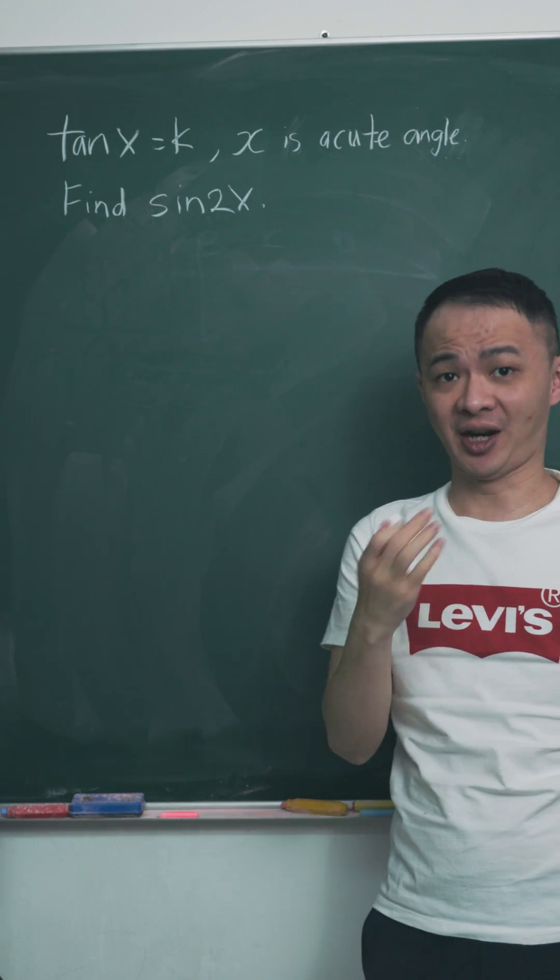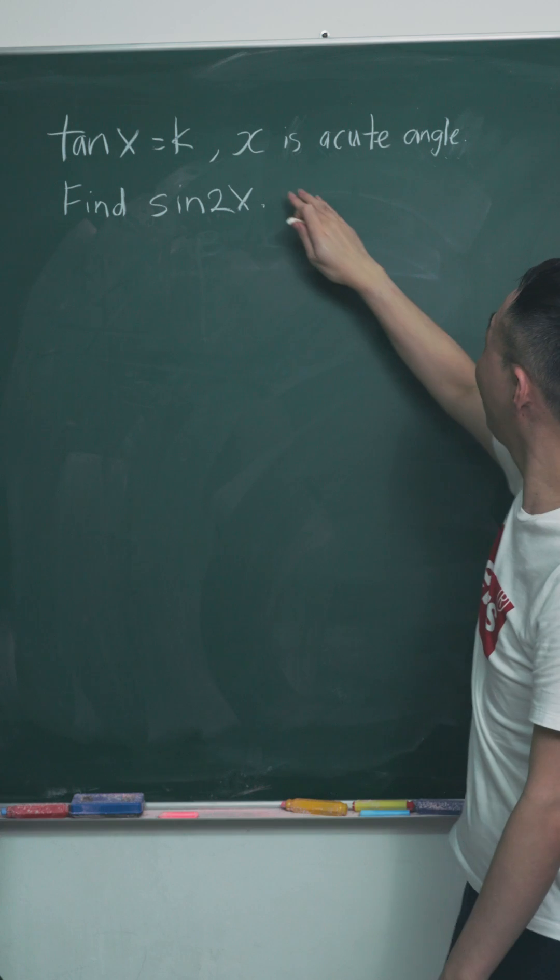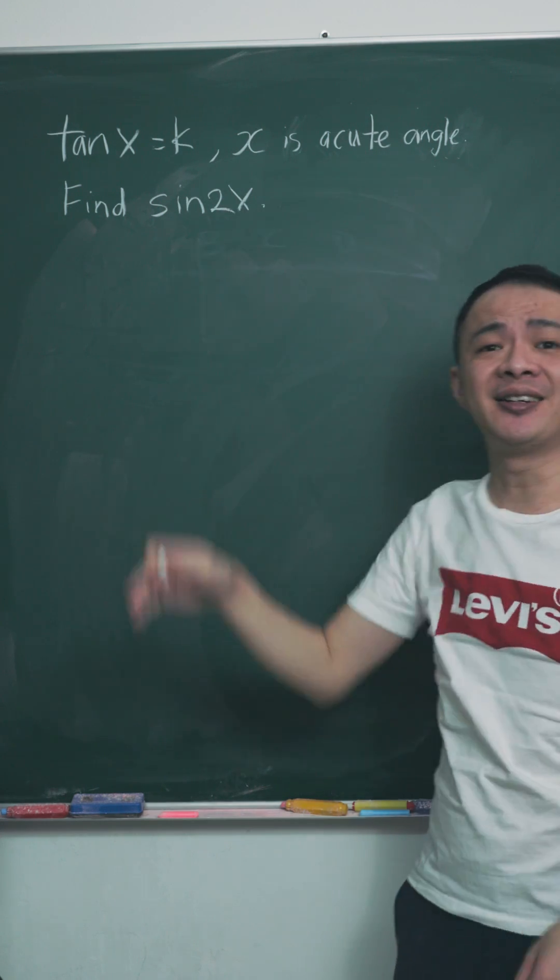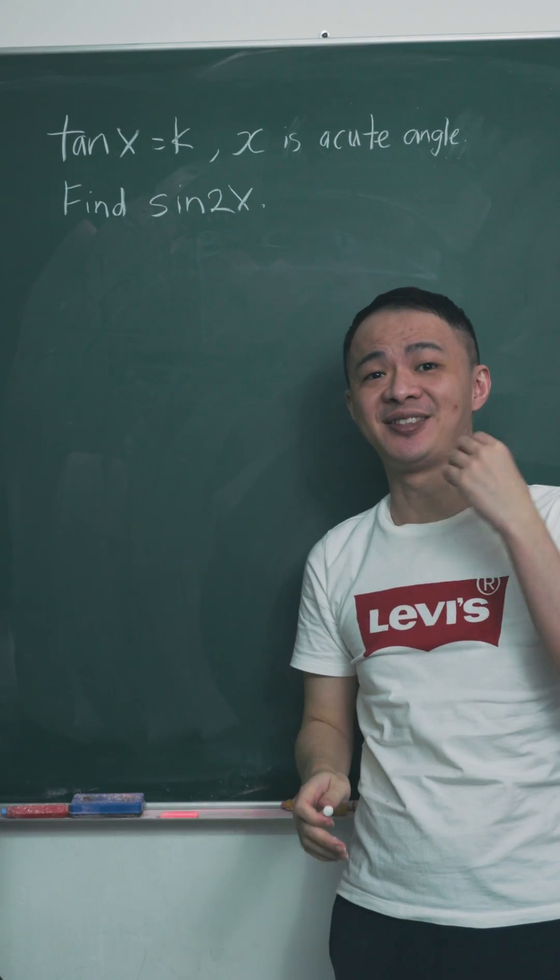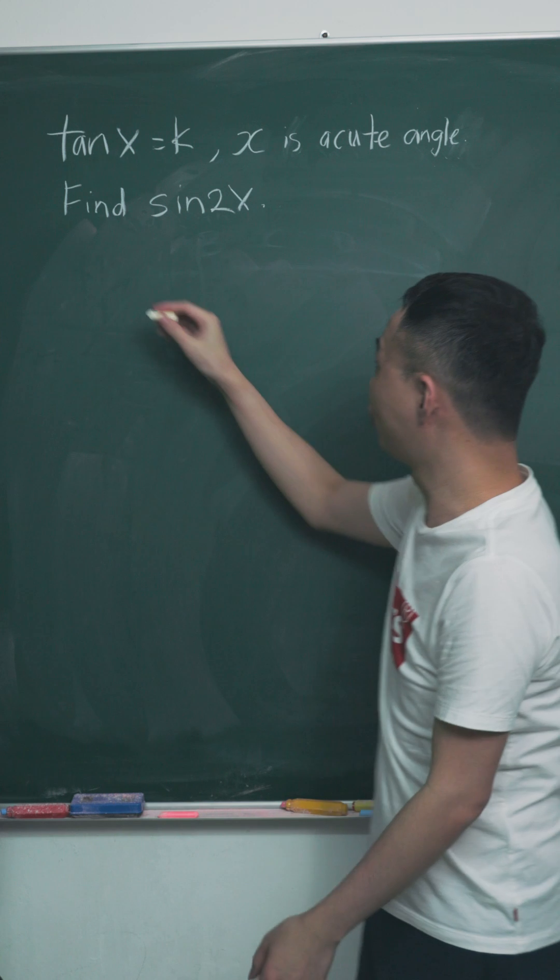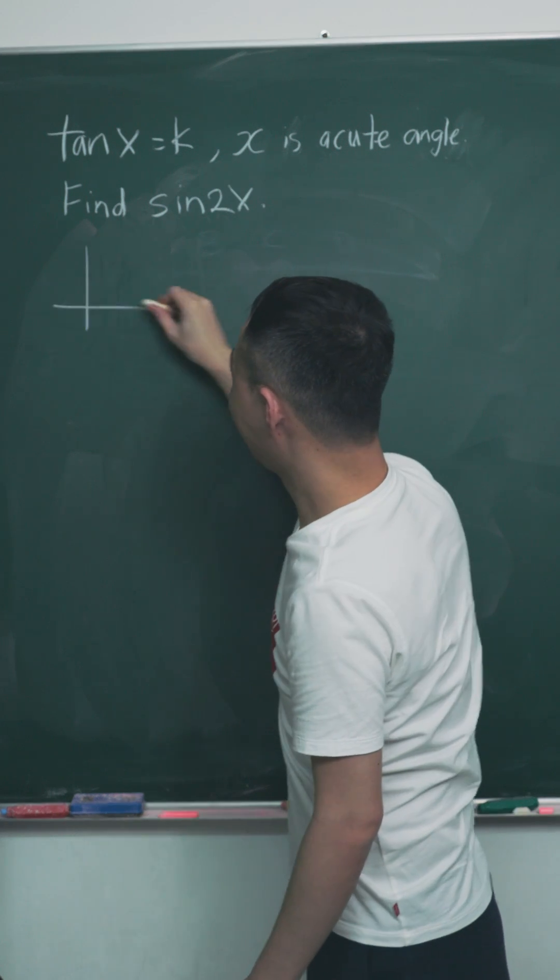So first thing is you need to draw out the triangle in the first quadrant. How do I know it's first quadrant? Because acute angle is the angle between 0 and 90 degrees. So I need to draw a triangle in the first quadrant.